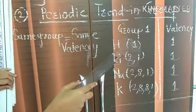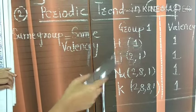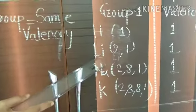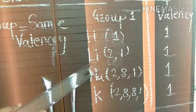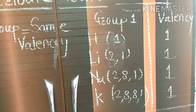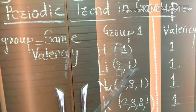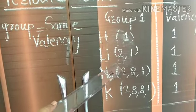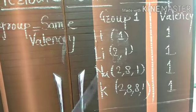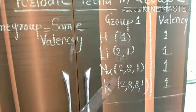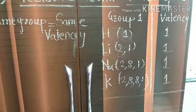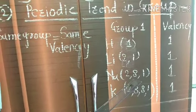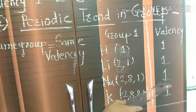In group one, hydrogen has electronic configuration 1 and valency 1. Lithium has atomic number 3 and electronic configuration 2,1. In the last orbit there is 1 electron; if lithium donates it, it acquires the duplet state, so valency of lithium is 1. Sodium has configuration 2,8,1. If sodium donates 1 electron, it acquires the octet state, so the valency of sodium is also 1.